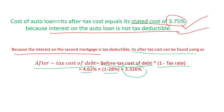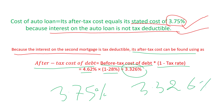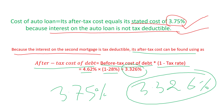Now which one would you choose? The second mortgage loan will cost you only 3.326 percent, compared to 3.75 percent for the auto dealer. Nobody's stupid — everybody will choose the second mortgage loan. That's why finance makes you smart. If you didn't have this finance knowledge, you might not make the right selection. I hope it makes sense, thank you.